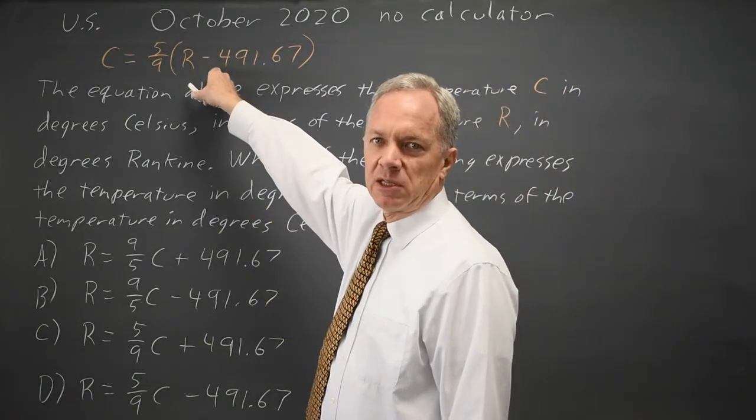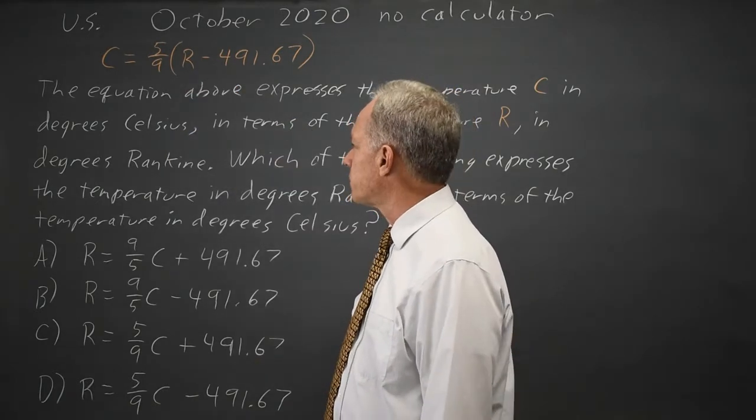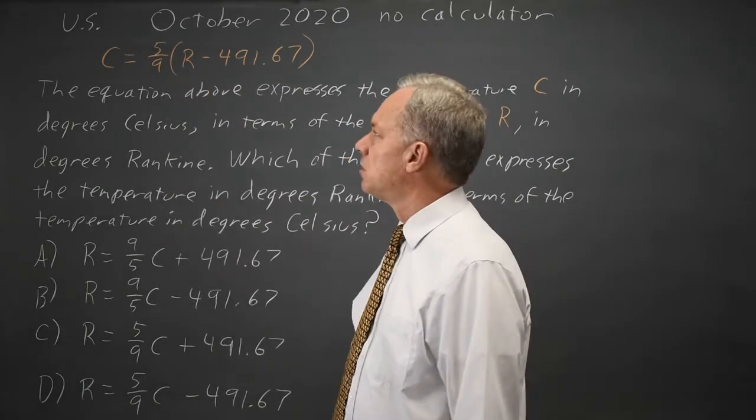The College Board gives us a formula and asks us to solve that formula for a different variable. We're currently solved for C. We want to solve for R.